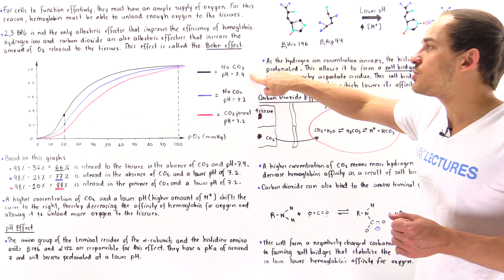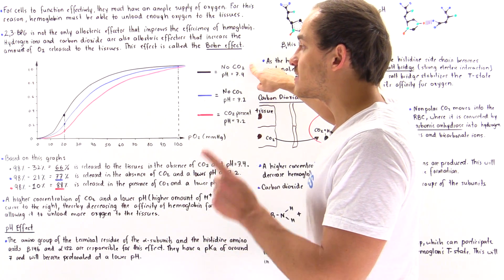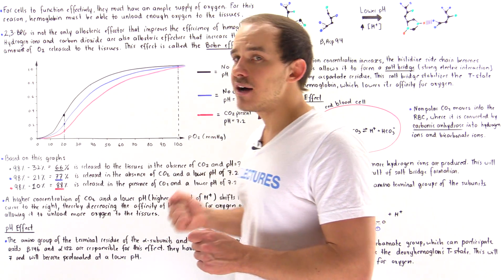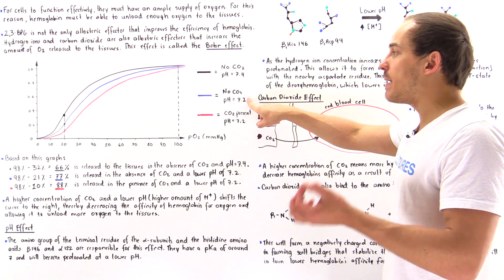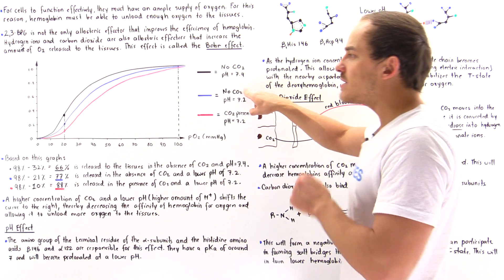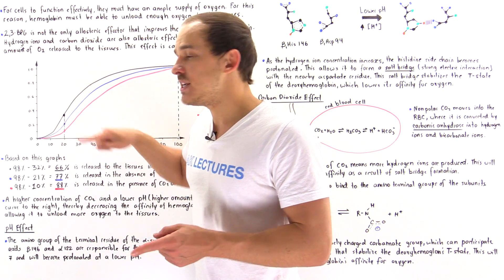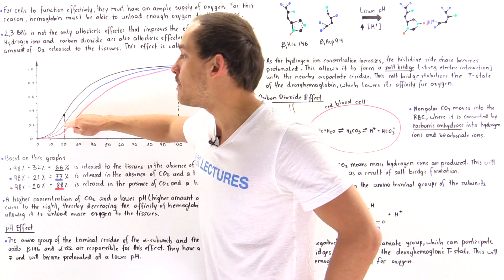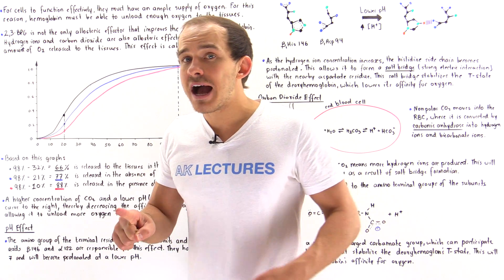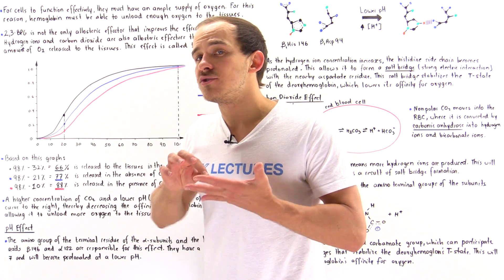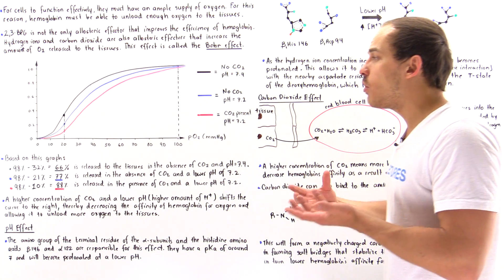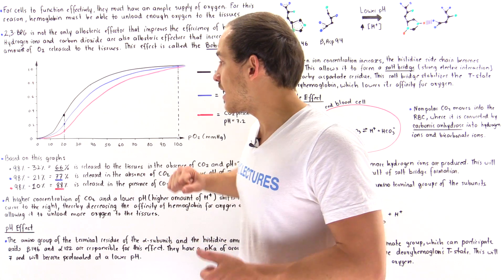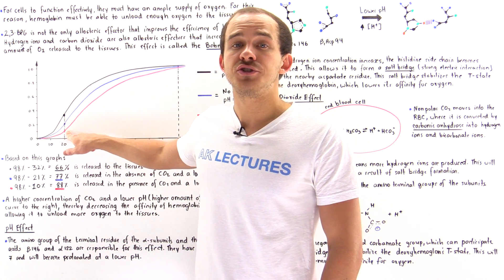For the black curve, at pH 7.4 with no CO2 in the exercising tissues, hemoglobin will be 32% saturated with oxygen. If we drop the pH to 7.2 with no CO2, the hemoglobin unloads more oxygen, with fractional saturation dropping to about 20%. If we also increase CO2 to about 40 mmHg, then at a partial pressure of 20 mmHg for oxygen in the exercising tissues, hemoglobin saturation drops to 10%.